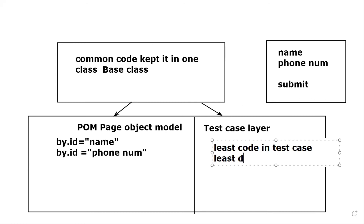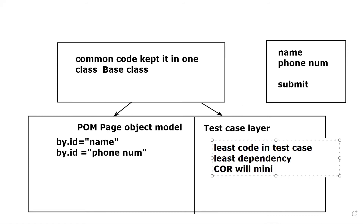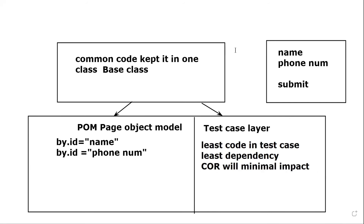Change of requirement will have minimal impact, as you have created POM. This is the high-level design of a framework. We understand why we create frameworks: to reduce code, reduce dependency, increase reusability of the code, and ensure change of requirement has minimal impact. We create frameworks so that it is easy to maintain the code. Once the design and structure is created, you just need to add the test cases, because everything else is already maintained. So maintenance is super easy.